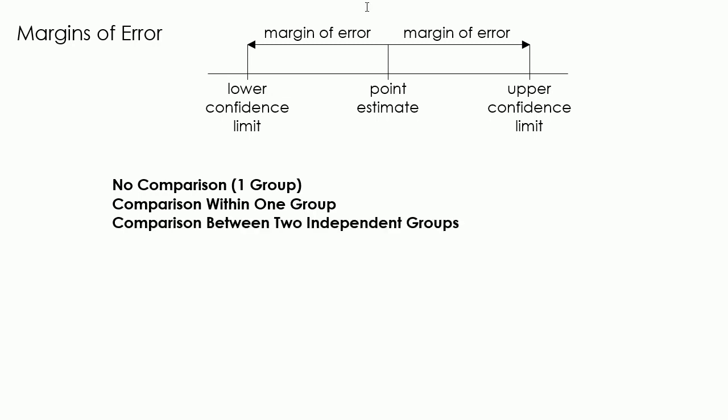The third type is comparison between two independent groups. This is where we've asked two separate groups a question. For example, 15% more boys think blah blah blah than girls. For each of these claims there is a different formula to use and a different interpretation.